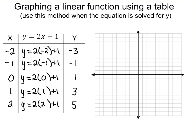Once we have these values, we actually want to graph these points. So what we're going to do is we're going to take negative 2, negative 3, and we're going to go over negative 2. So 1, 2, and down 3. Put a point there.